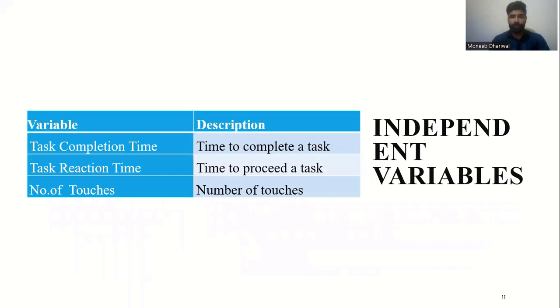There were three study variables, including task completion time, that was the time to complete a task, task reaction time, that was the time to take the first action in the task, and the total number of touches.